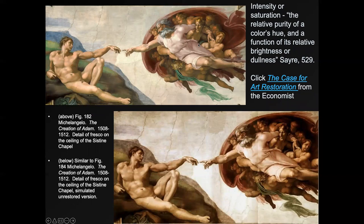Intensity or saturation refers to the relative purity of a color's hue and the function of its relative brightness or dullness. When you think of a saturated color, think 'wow, it's exactly that color — it's almost glowing.' When you have low saturation or a dull color, all the colors are muted. Looking at the same painting with and without saturation, you can see how God's cloak doesn't seem to have a color at low saturation, but it's pink in the saturated version, and his hair goes from looking black-and-white to a glowing silver. Intensity or saturation refers to how intense the colors seem.